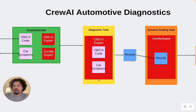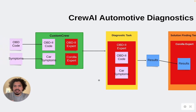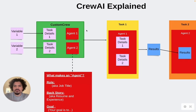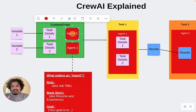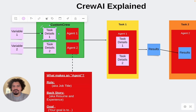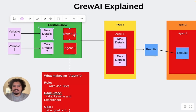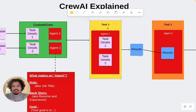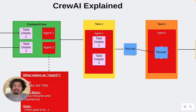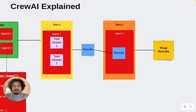Let's go over a bit about how CrewAI is set up. If you recall from the previous video, when you run your CrewAI project you build a custom crew. It has two custom agents, and it takes the task details you type in when you run the program. It performs the first task using the first agent, gives you a result, and then for the second task using the second custom agent, it takes those previous results and gives you your final solution.